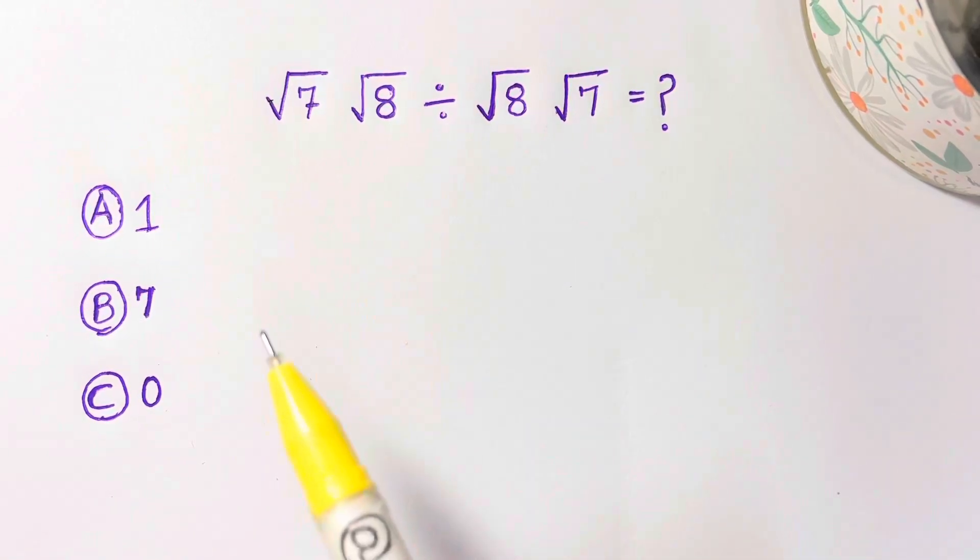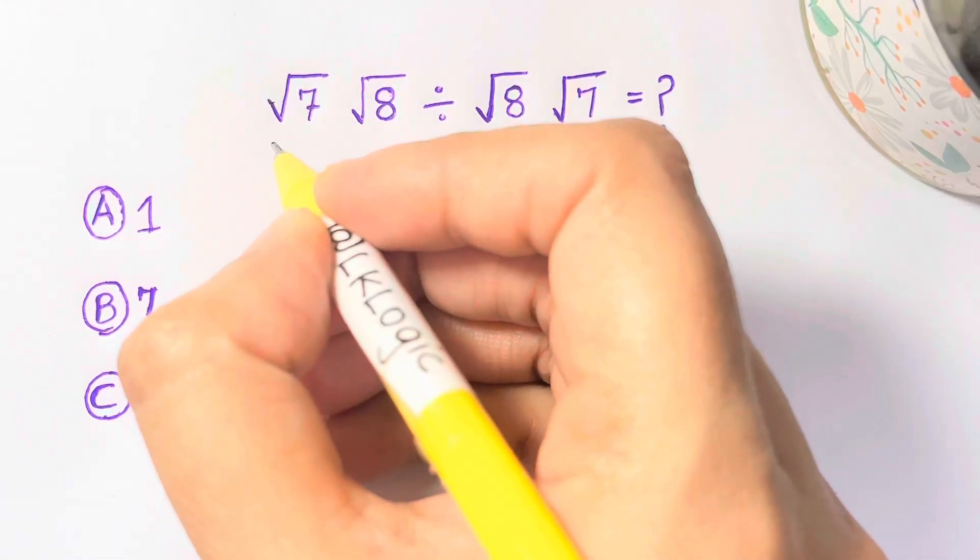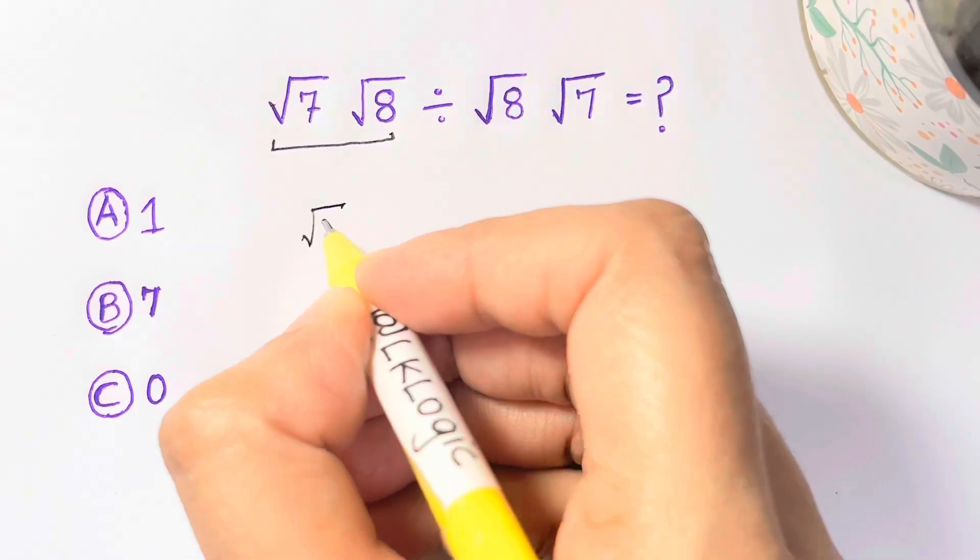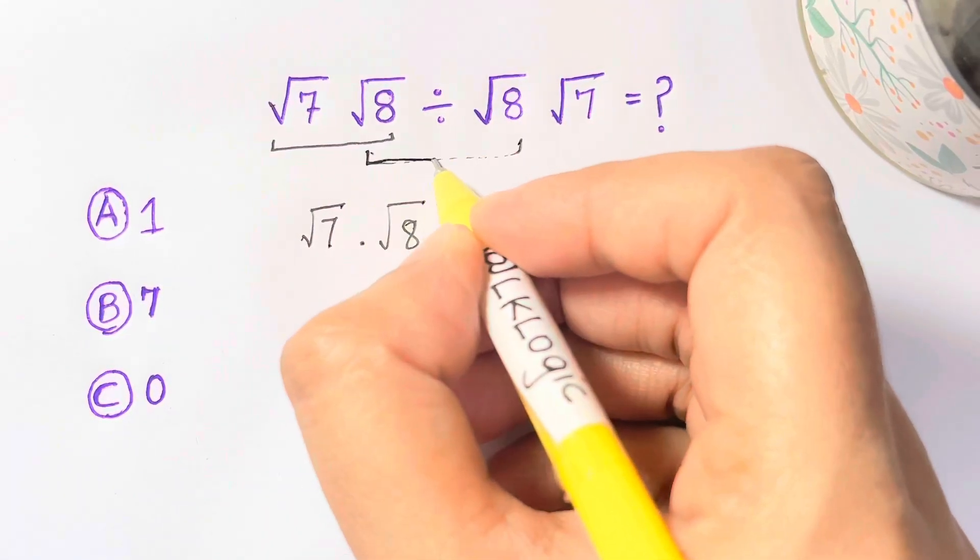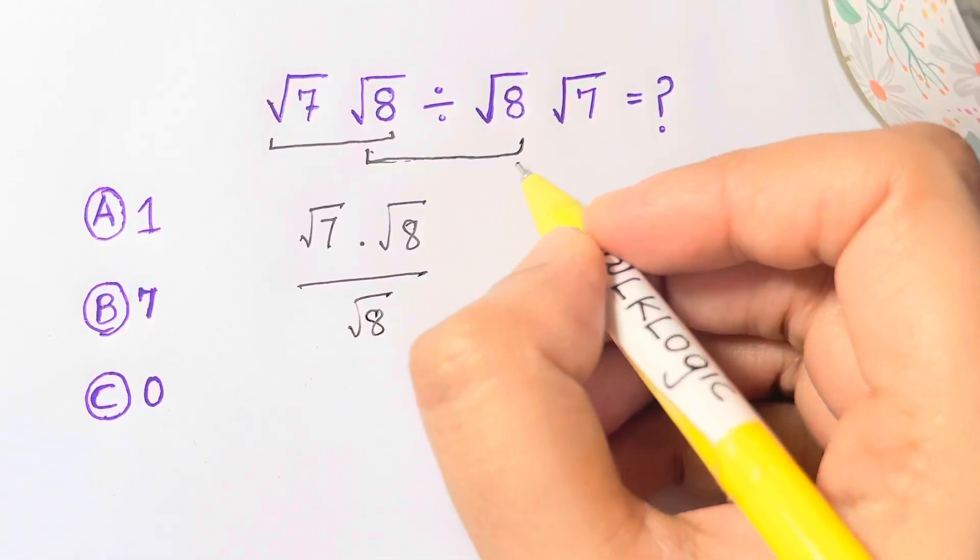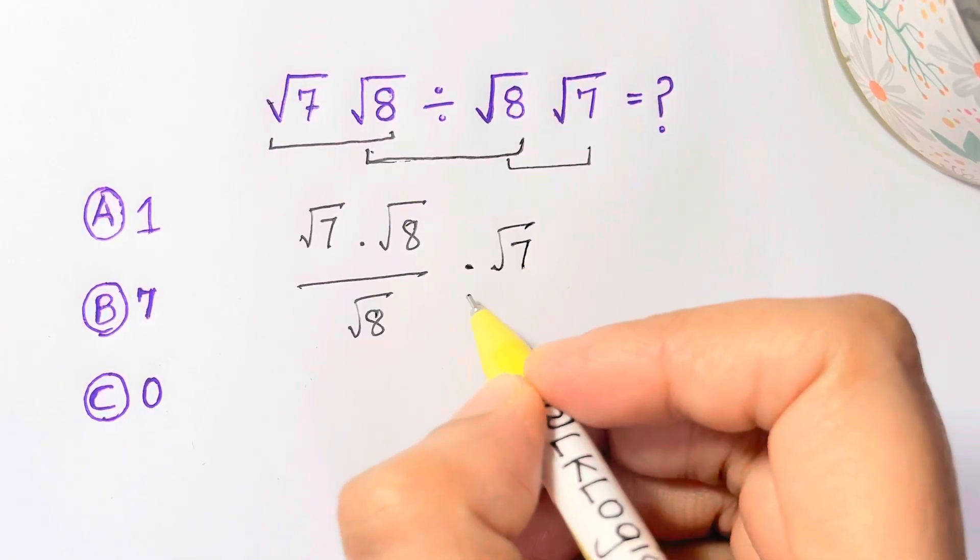So let's solve using our PEMDAS rule which says whenever there's multiplication and division the precedence is given from left to right. So let's solve square root of 7 times square root of 8 and then we have divided by square root of 8 and then we have times the square root of 7.